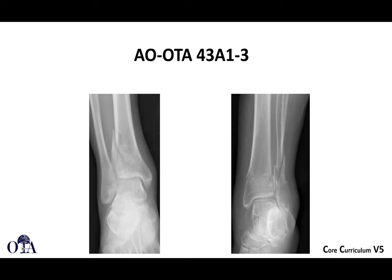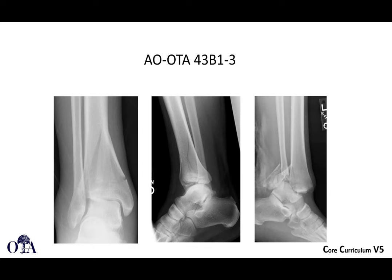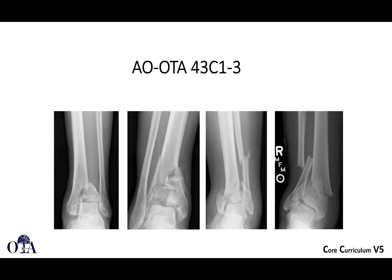An A-type injury is really not a pilon fracture per se—it's a very distal but extraarticular periarticular fracture. A B-type shows partial articular involvement, for example anterior plafond involvement while the posterior joint surface remains intact relative to the shaft. C-type fractures, where all articular segments are dissociated from the shaft, come in varieties including fibula intact, fibula fractured, and valgus patterns.